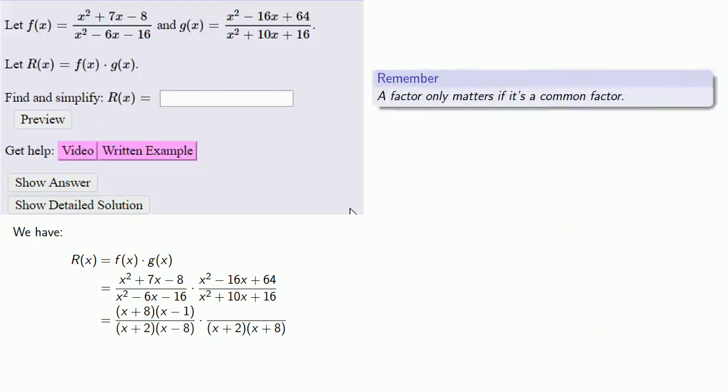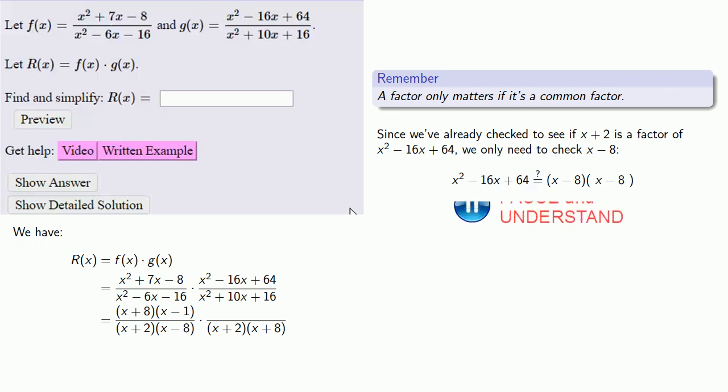So again, a factor only matters if it's a common factor. Now we've already checked to see if x plus 2 is a factor of x squared minus 16x plus 64. So we'll only need to check to see if x minus 8 is a factor. So we'll see if x squared minus 16x plus 64 factors as x minus 8 times something. And our something, in order to get this plus 64, has to be another x minus 8. And so we'll check. And it works!